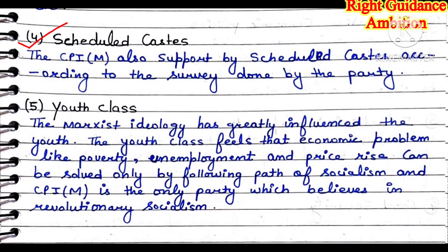Fourth point is scheduled caste. The CPIM party has worked for and supports scheduled caste communities. Fifth, youth class. Marxist ideology has greatly influenced the youth, who believe that economic problems like poverty and price rise can be solved by socialism. CPIM is the only party which believes in revolutionary socialism — if there is instability, change can be brought through revolution.